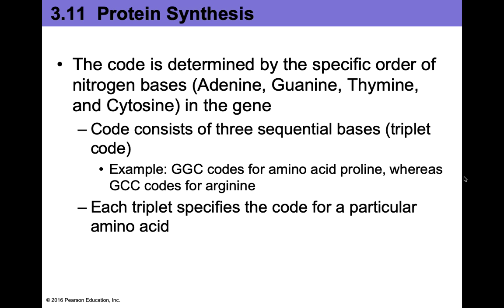Those four bases make up every single living thing on this planet. This specific order of our nitrogenous bases is the information to make you — telling your body to make a green eyeball, freckles, and so on. That's what your DNA encodes. We're going to use that information to make our proteins, which form our enzymes and structural proteins to actually make you look the way that you look.